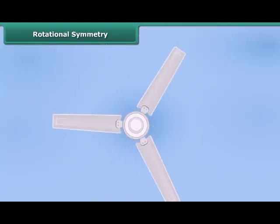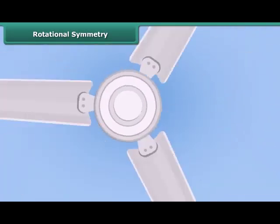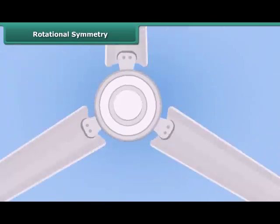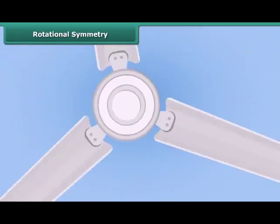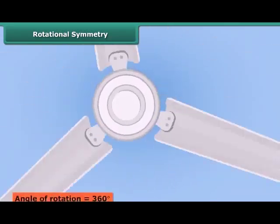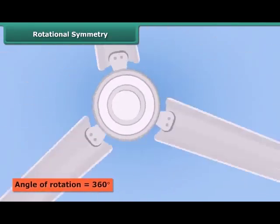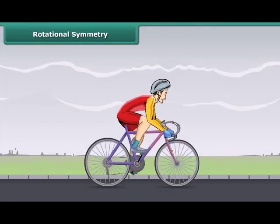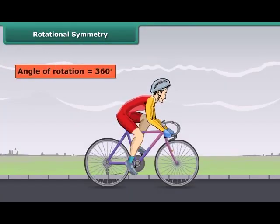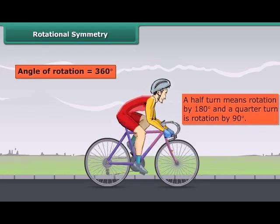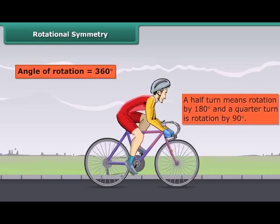When an object rotates, its shape and size do not change. This rotation turns an object about a fixed point called the center of rotation. The angle of turning during the rotation is called the angle of rotation. If a thing makes a full turn, its angle of rotation is 360 degrees. A half turn means rotation by 180 degrees and a quarter turn is rotation by 90 degrees.